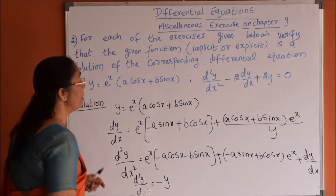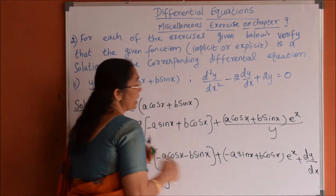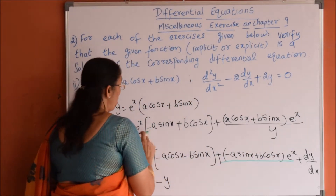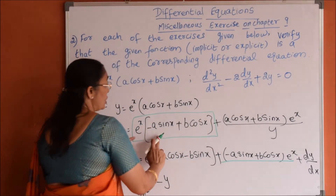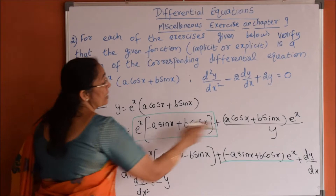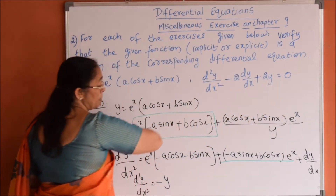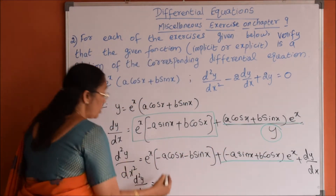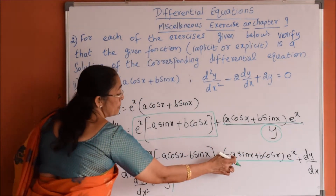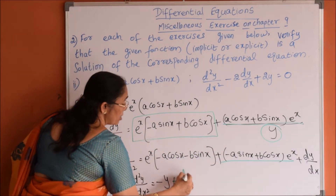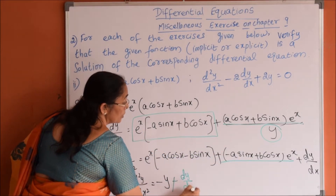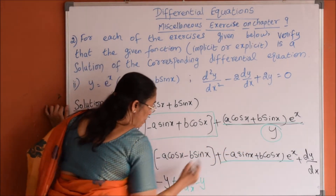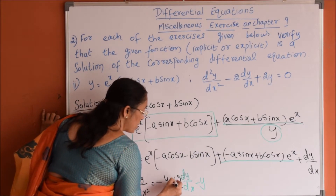Coming to the second term: minus a sin x plus b cos x into e power x. This term is nothing but dy by dx, and minus of the remaining part that is y. So this part is dy by dx minus y. And there is one more dy by dx, so together it is two times dy by dx.